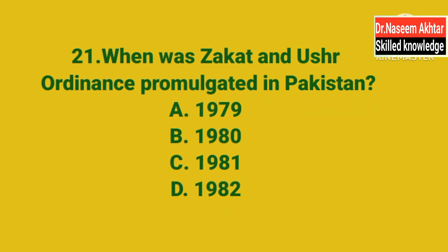MCQ 21: When was the Zakat and Ushr Ordinance promulgated in Pakistan? پاکستان میں Zakat اور Ushr کا ordinance کب نافذ ہوا؟ A. 1979, B. 1980, C. 1981, D. 1982. The correct answer is A — 1979.